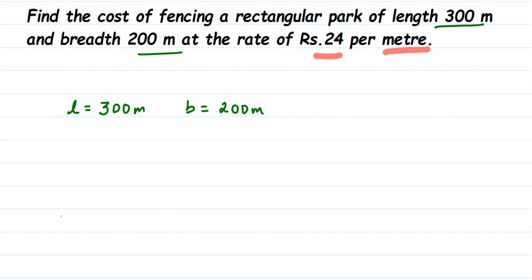What we have to find out: first we have to find out the perimeter. So perimeter of rectangle formula is 2 into l plus b. So perimeter of rectangular park is equal to 2 into l plus b. You have to substitute the values here.